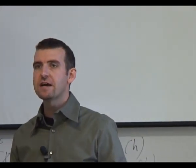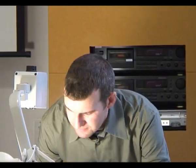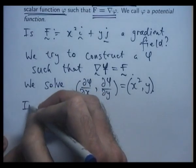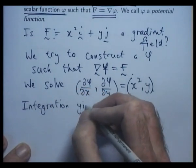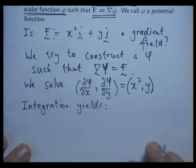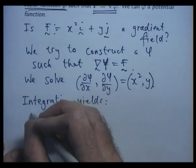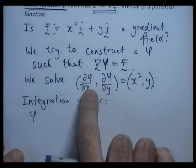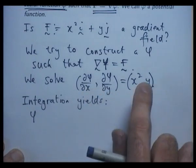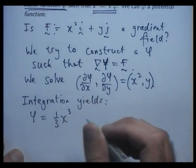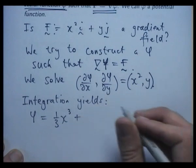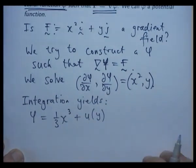So we've got two differential equations there, and they can both be integrated quite easily. Integration yields the following. If I integrate d phi dx equals x squared with respect to x, I'm going to get something like phi equals one third x cubed plus u of y.